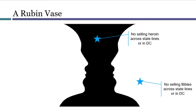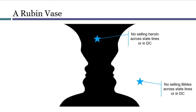Meanwhile, a law that bans sales of Bibles across state lines or in the District of Columbia violates the First Amendment, so that star falls into the limit zone and is not constitutional. A law requiring everyone to wear polka dotted shirts on Wednesdays doesn't fall within the powers, so it's also outside the vase. These examples are pretty simple, but some examples will be much harder to situate.